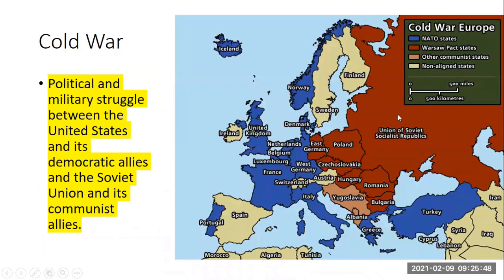This map is incredibly important. It explains the Cold War. This is essentially what Europe looked like after World War II ends. The Nazi Empire has been defeated. The Soviet Union, which is red, had conquered Eastern Europe. And America and Britain had conquered Western Europe — France, Belgium, Netherlands, West Germany, Italy.